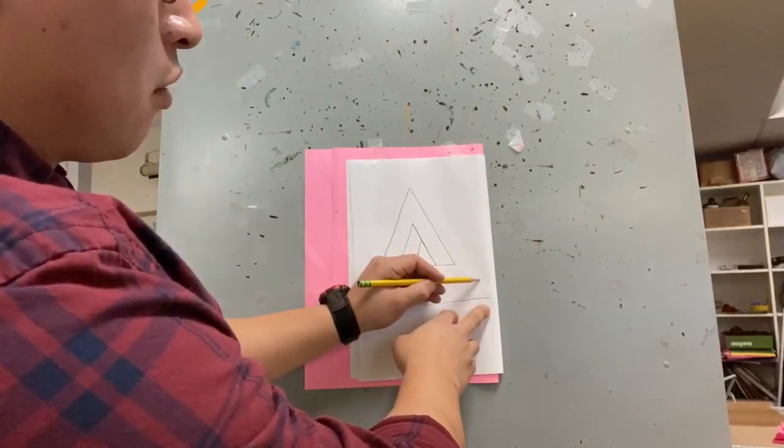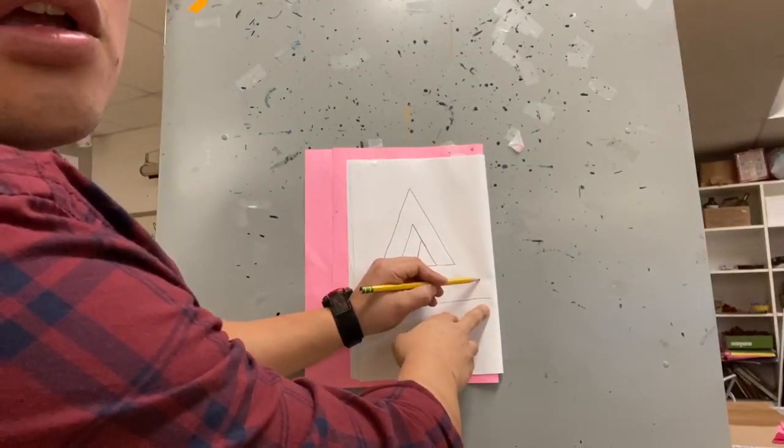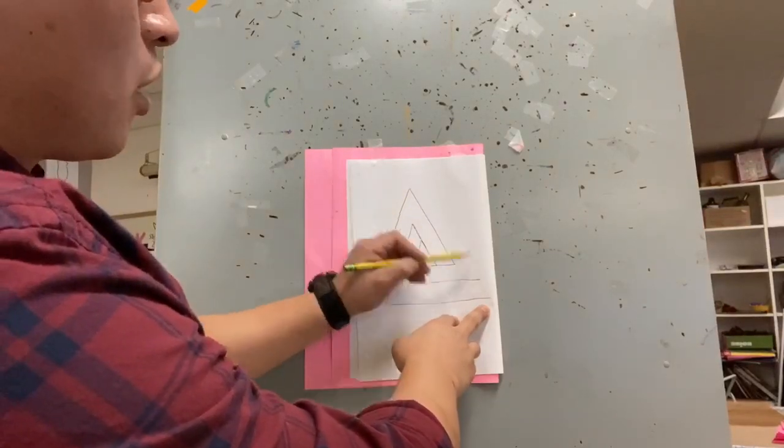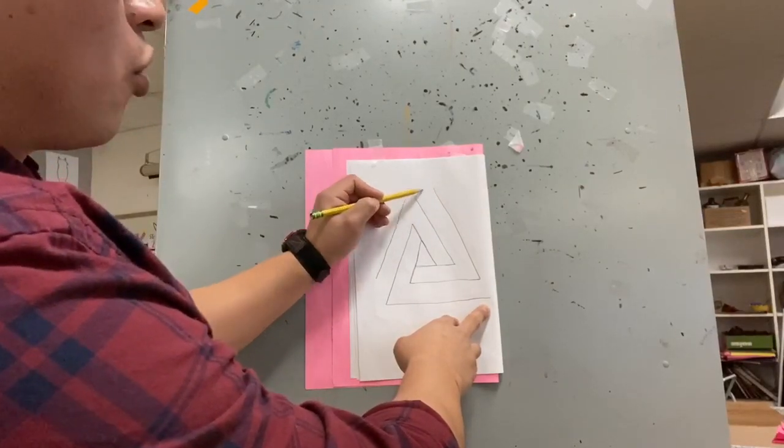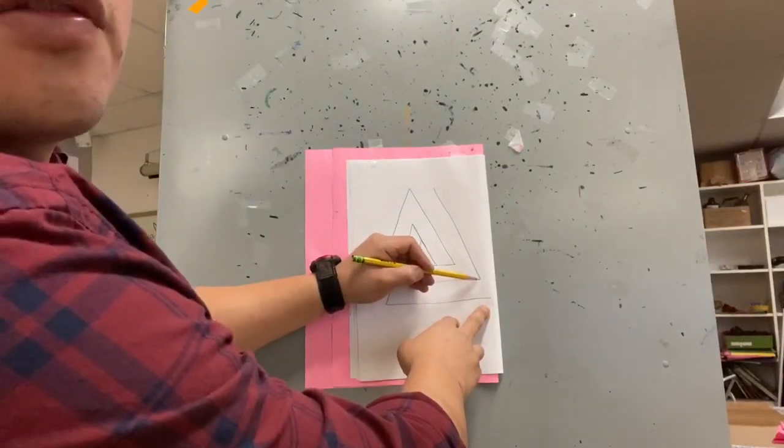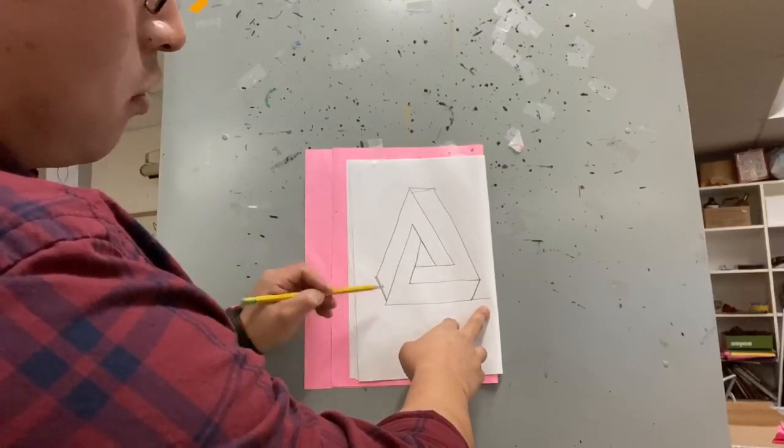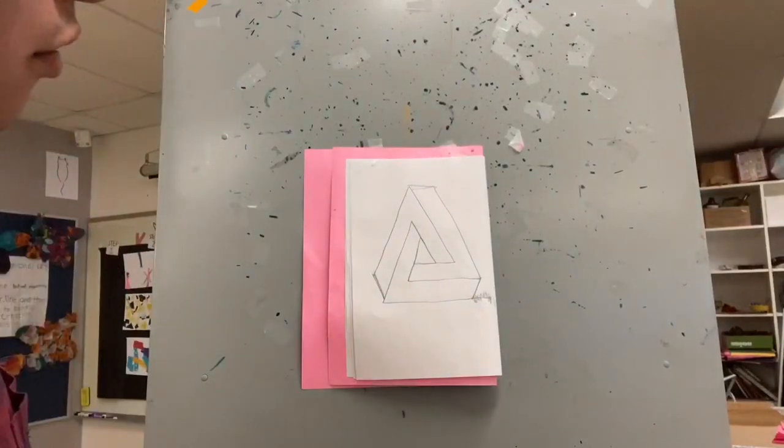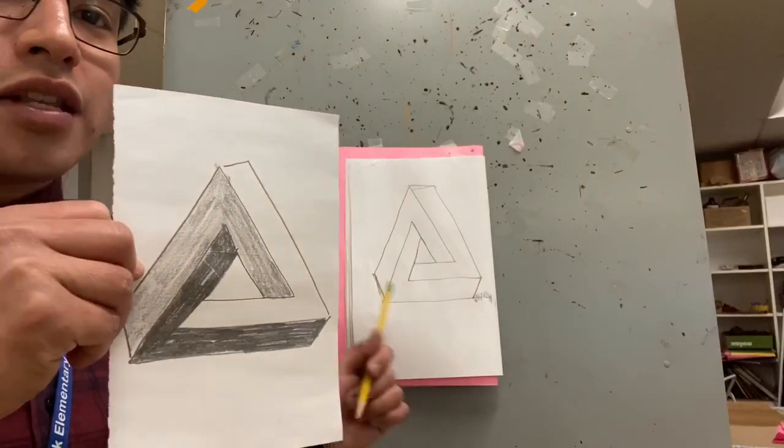After that, you want to start on this line up top here. You bring this line up, up, up, up. Stop. And then you want to bring this line down, down, down, but you don't want to pass this here. Stop right about there. And then you want to bring this line all the way up to this point here. Right about there. And then what you want to do is you want to connect these lines. One, two, three. But for the most part, we've made it. The impossible triangle. Go ahead and see how it works out for you.